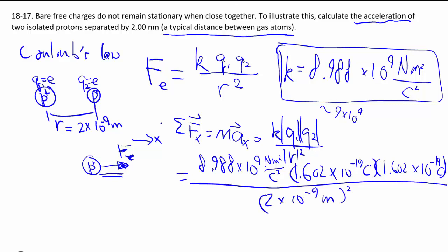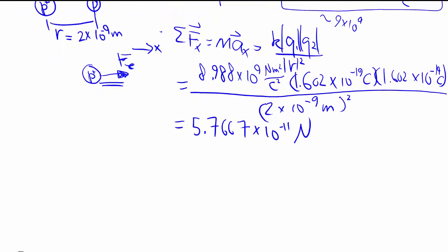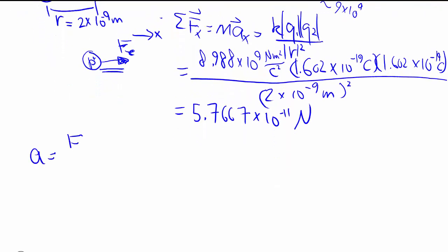Again the nano becomes 10^-9 meters, and we square all that. Some calculator work later, we get 5.7667, keeping lots of digits because we're not quite done yet. And that's in newtons. Not a huge force.